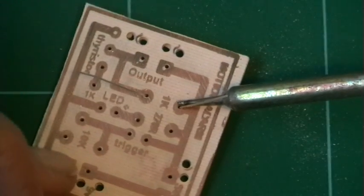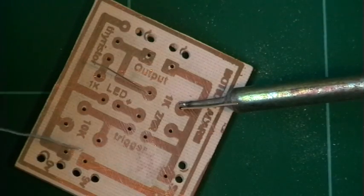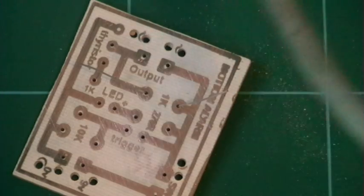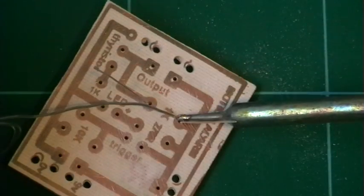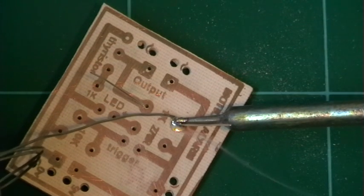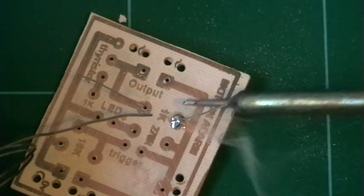We're going to place the tip of the soldering iron onto the track and then carefully add the solder into the joint. You can see the solder melting there and there's our joint.